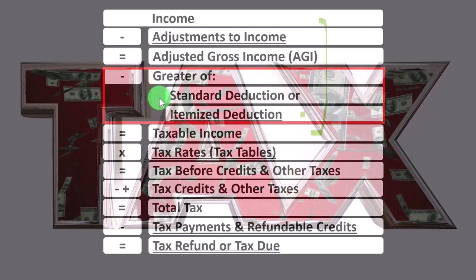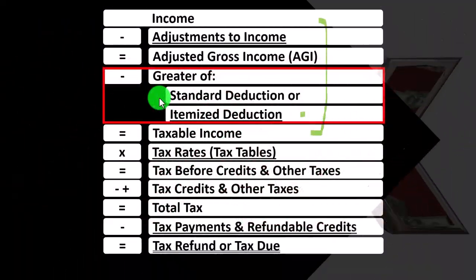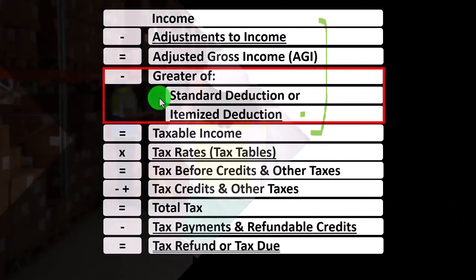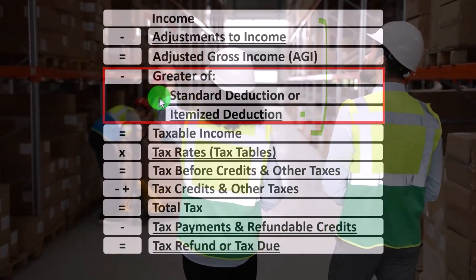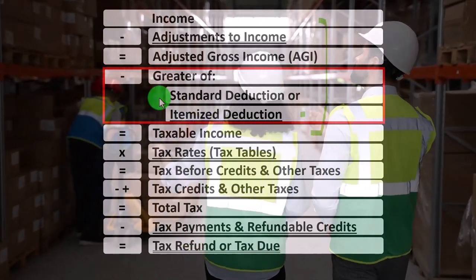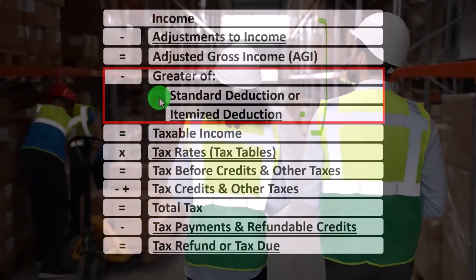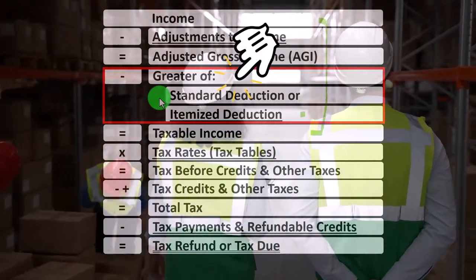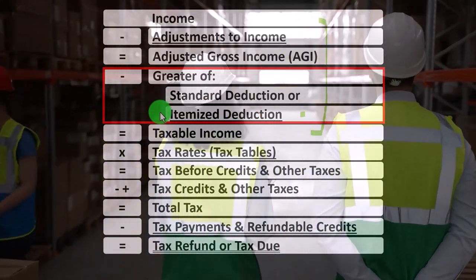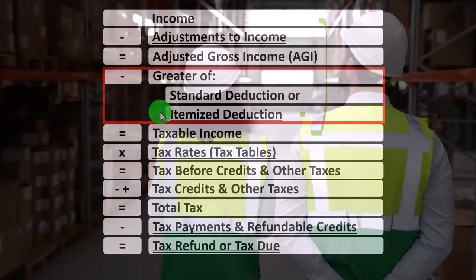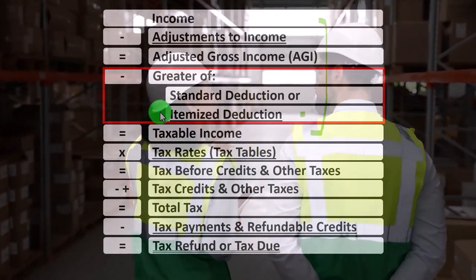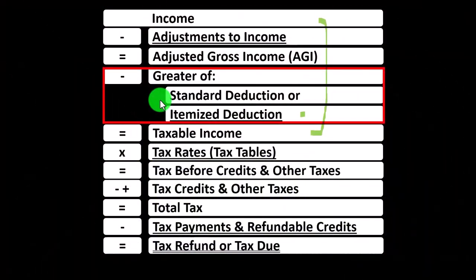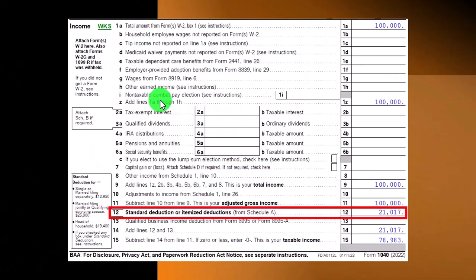In practice, the general idea with standard versus itemized deductions is to know what the standard deduction amounts are, understand what pushes people toward itemizing — usually purchasing a home — and determine when it's worthwhile to compile the additional itemized deduction information because it could possibly clear the standard deduction threshold.